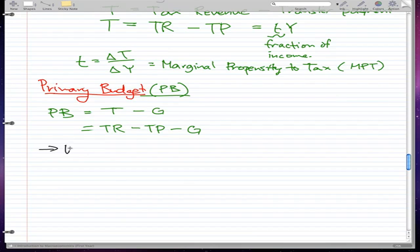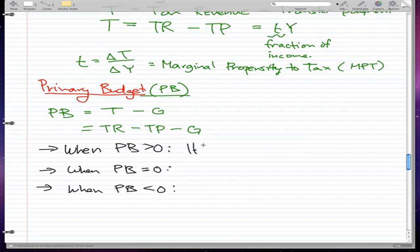There are three cases for primary budget: when PB > 0, when PB = 0, and when PB < 0. When primary budget is greater than 0, there is a surplus - a PB surplus.